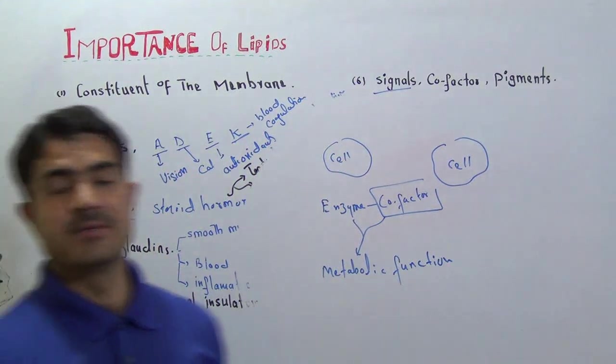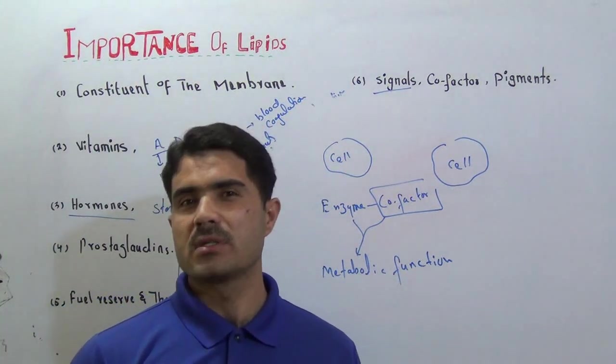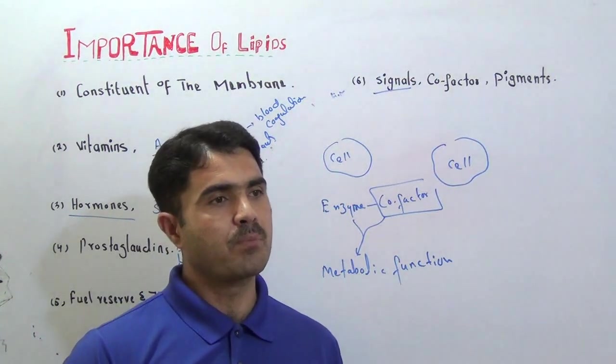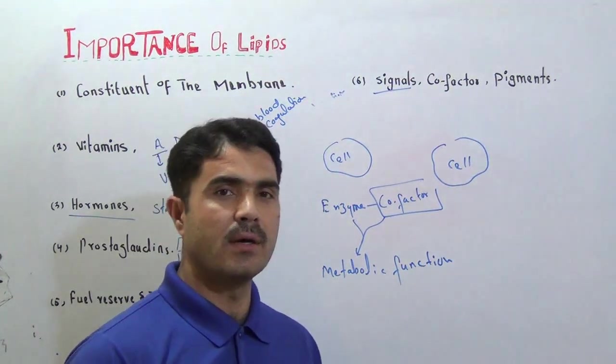Metabolic functions are the breakdown process and the making process that are continuously happening in our body to sustain functions and provide functions to our body. These metabolic functions are under the control of enzymes, and enzymes themselves need a non-protein part called cofactor. Not all cofactors, but some cofactors are also made of lipids.